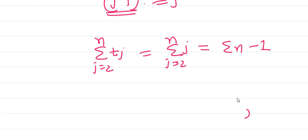This is nothing but Sigma n minus 1, which is nothing but n into n plus 1 divided by 2 minus 1. So this is for TJ.